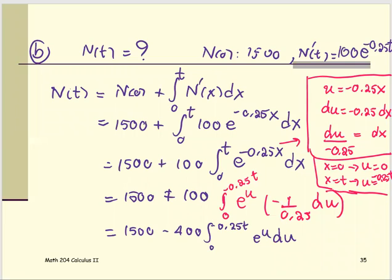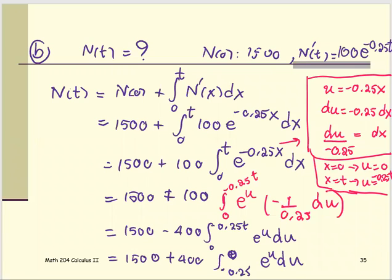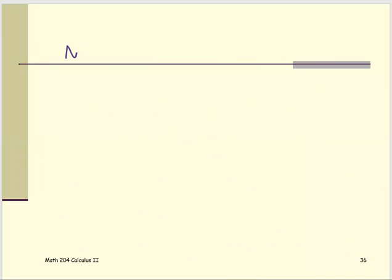Much cleaner. Since we have negative sign for the upper limit, I'm going to swap them. When I swap them, I have to change the sign of the negative 400 to positive 400. This is negative 0.25T to zero, e to the u du.